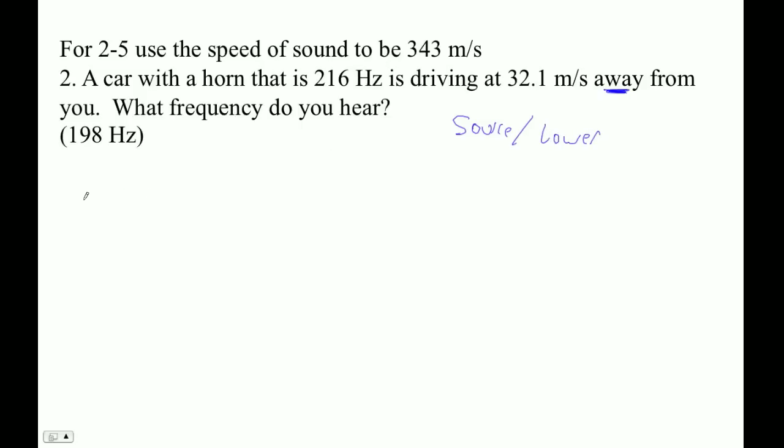So the formula is that the shifted frequency is the original frequency times V, and then V plus or minus the speed of the source. In this case, we're going to use the plus, because we want to get a lower frequency, because it's going away from us.